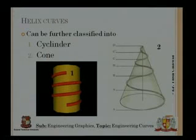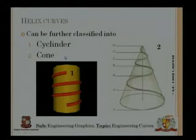Helix is a very common thing encountered in daily life — for example, the spring inside a pen. There are two types: cylindrical and conic. The spring in a pen is a cylindrical helix. If the cross-section gradually decreases from base to top, it becomes a conic helix. The base can be large tapering to small, or vice versa — both are still called a cone.